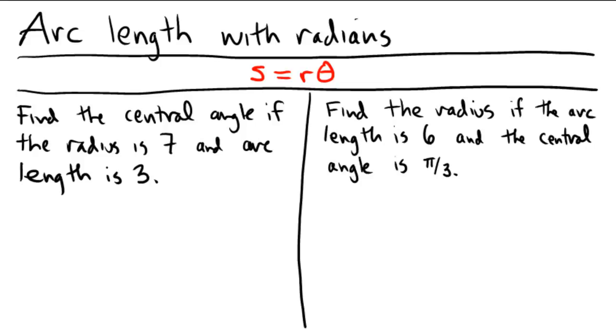and theta represents the measure of the central angle of the circle. So in the picture, if we had a picture of this, it would look like a circle with some kind of radius, and then this is the s, and the theta is in there.